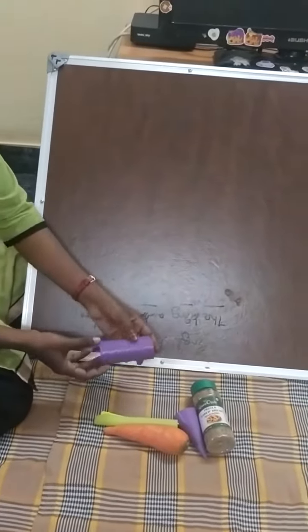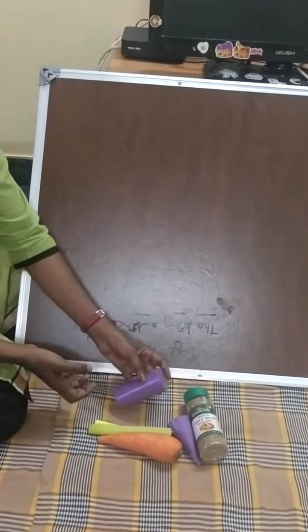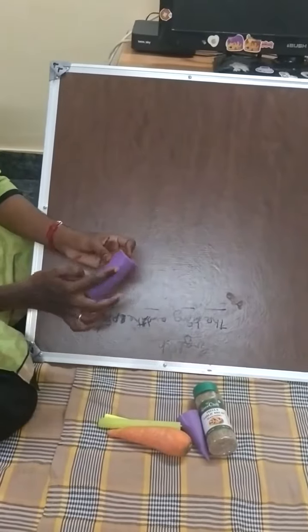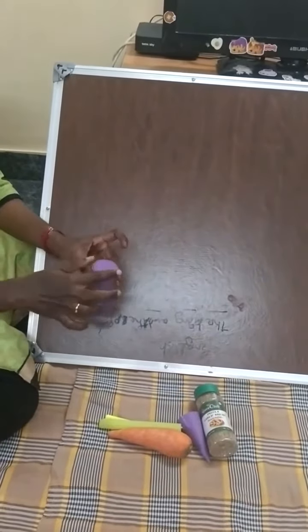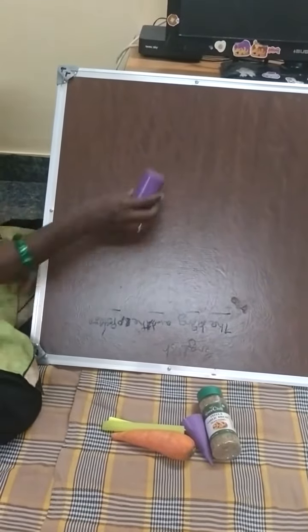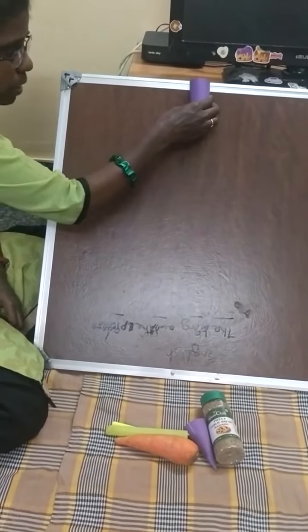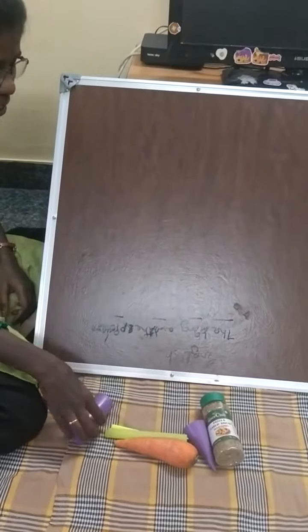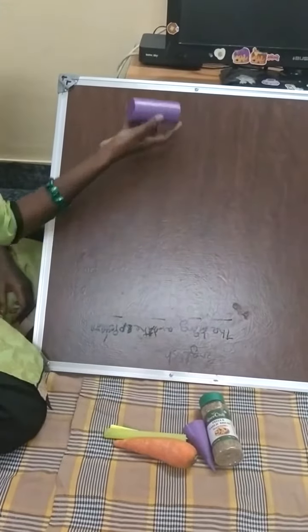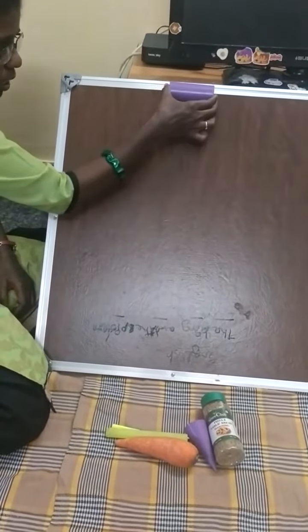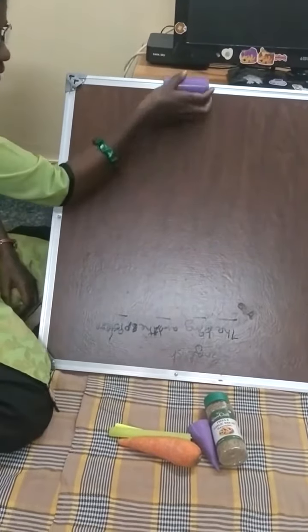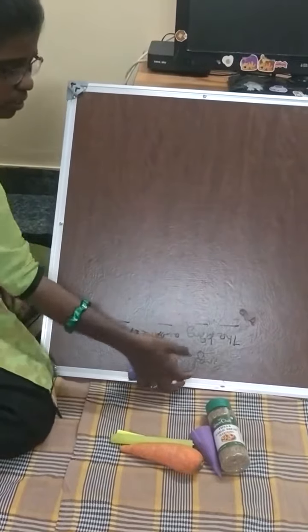Now let us try with objects which have both surfaces. You can see — this is curved and this is flat. So now I am leaving it in this direction — it is sliding. Now in this direction with the curved surface — it is rolling.